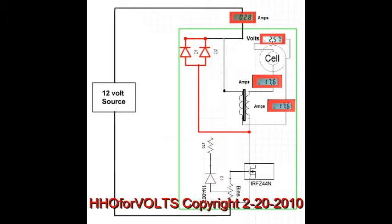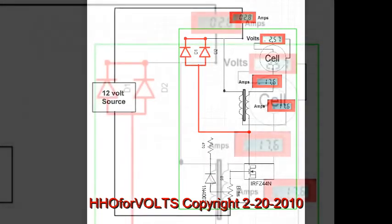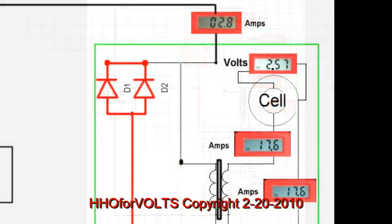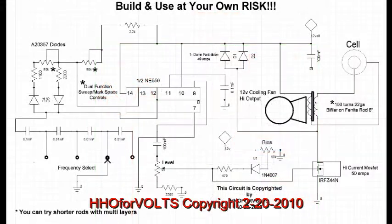Here are all the meters seen at one time. Draw from the power supply is 2.8 amps, the volts across the cell is 2.57, and 17.6 amps drawn through the circuit from the cell.